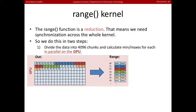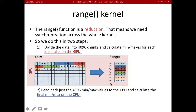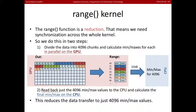That processing happens quickly on the GPU, and now we have much less data. We just need to read back those values to the CPU and calculate the final minimum and maximum. Now we just need to copy 32 kilobytes instead of 64 megabytes back to the CPU, then calculate the minimum and maximum for just those 4,096 partial reduction values.